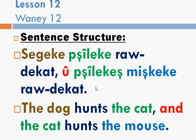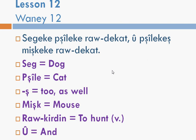And the cat hunts the mouse. But in Kurdish we say: and the cat, Pshilaka, the mouse, hunts. So in Kurdish: Sagaka Pshilaka raudakat, Pshilaka Mishka raudakat.